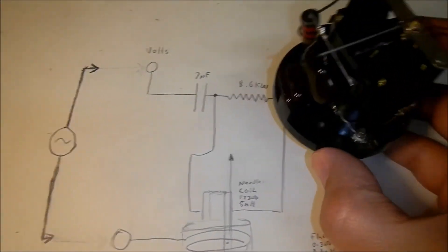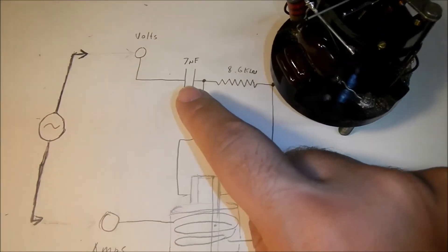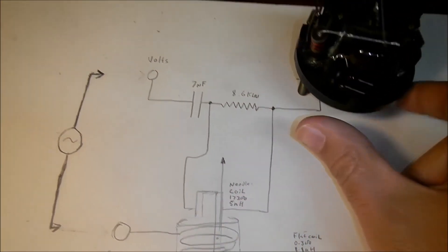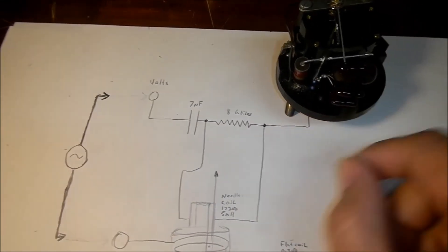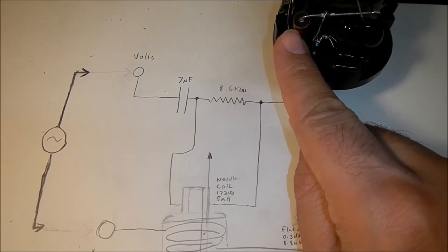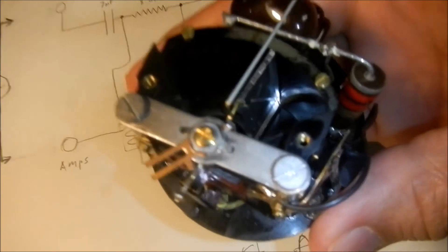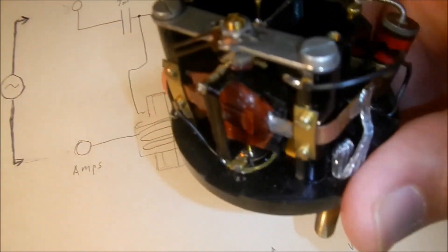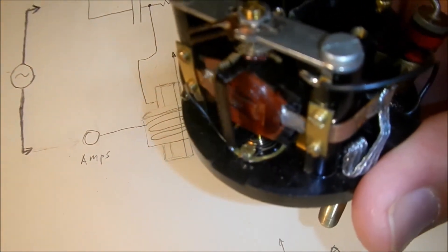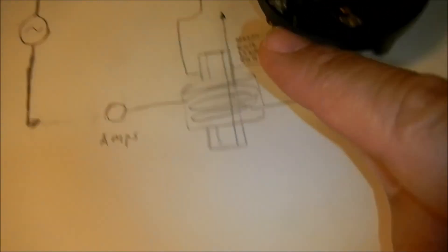Just to point out, I'll show you the components. So this is the 7 nanofarad cap here. This is the 8.6 kilohm resistor. We connect to the needle coil. So this is a voltage sensing coil. And the current sensing coil.